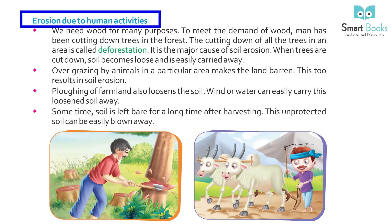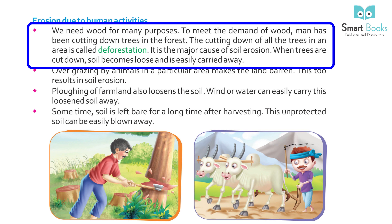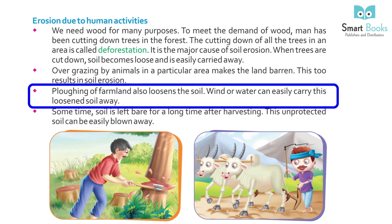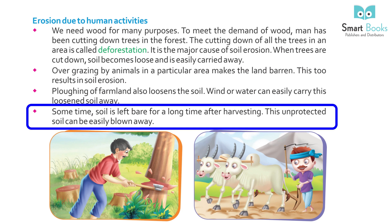Erosion due to human activities: We need wood for many purposes. To meet the demand, men have been cutting down trees in the forest. The cutting down of all the trees in an area is called deforestation, and it is the major cause of soil erosion. When trees are cut down, soil becomes loose and is easily carried away. Overgrazing by animals in a particular area makes the land barren and results in soil erosion. Ploughing of farmland also loosens the soil, which wind or water can easily carry away. Sometimes soil is left bare for a long time after harvesting, and this unprotected soil can be easily blown away.